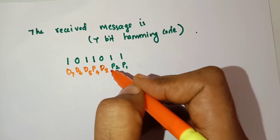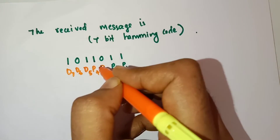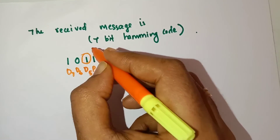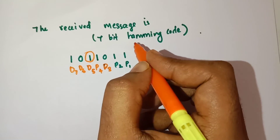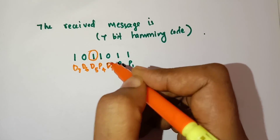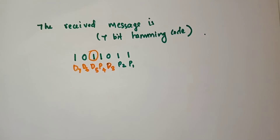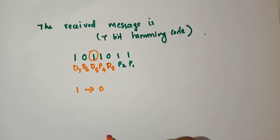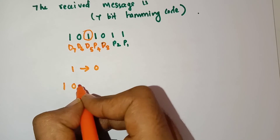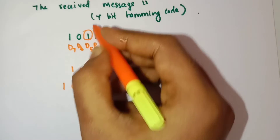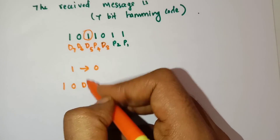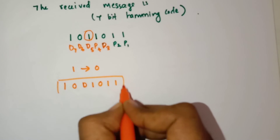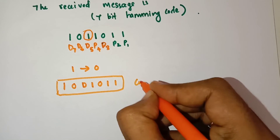In the 5th position there is an error, so we want to correct it by inverting the value of D5. The value is 1, so we change it to 0. That means the correct message is: 1, 0, 1, 1, 0 — the 5th position is changed from 1 to 0 — so the corrected bits are 1, 0, 1, 1, 0, 1, 1. Wait — the corrected message is 1, 0, 1, 0, 1, 1. This is the correct message.